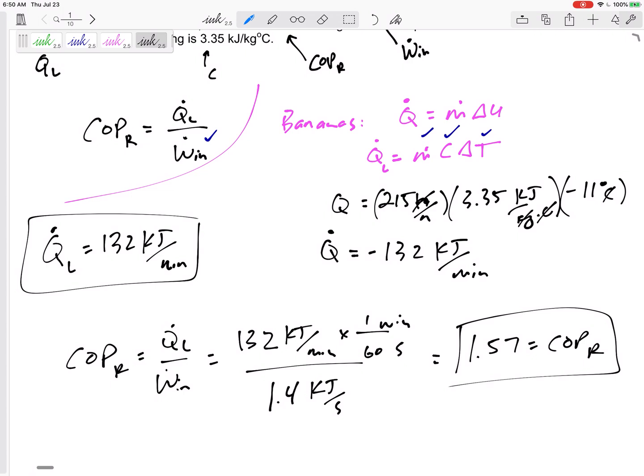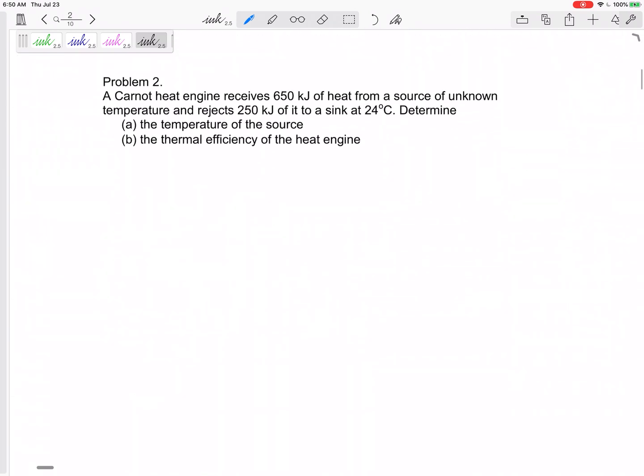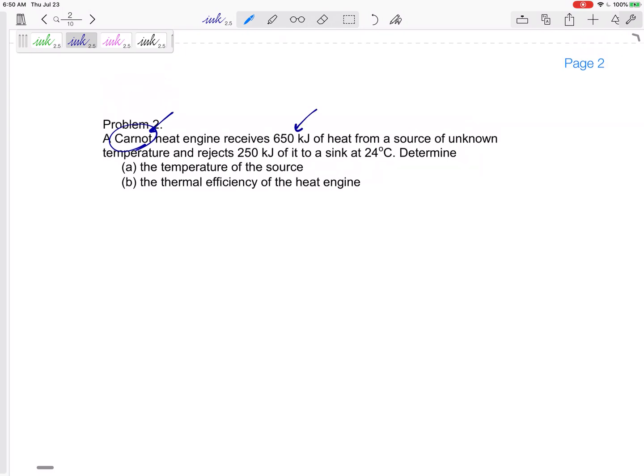Let's continue with these chapter six problems. Again, I really think it's deciphering what the problem is really telling you. A Carnot heat engine receives 650 kilojoules of heat from a source of unknown temperature and rejects 250 kilojoules of it to a sink at 24 degrees C. So this right here would be the Q_H from the T_H we don't know. This would be the Q_L from the T_L that we do know.